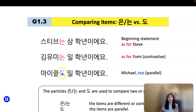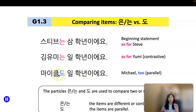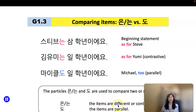Now, how about Michael? Michael 1학년이에요 — freshman. You go back to the immediately preceding person, 김유미, and find something in common: they both are 1학년. So by adding particle 도 to the person you want to mark as an additional item with something in common, 마이클도 1학년이에요. So particles 은/는 and 도 are used to compare two or more items: 은/는 for items that are different or contrasted, 도 for items that are parallel.